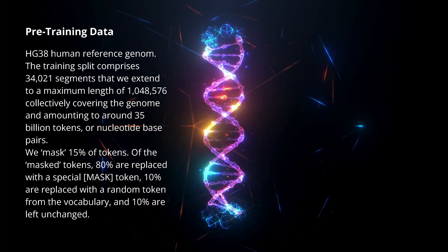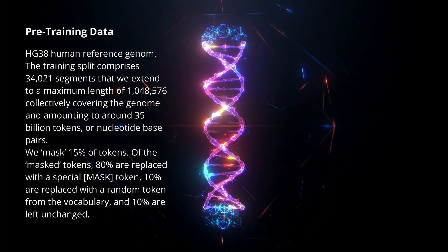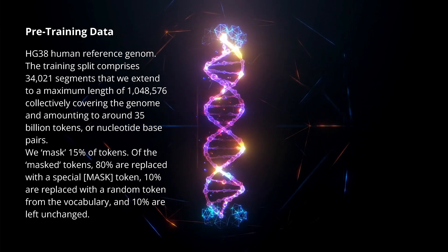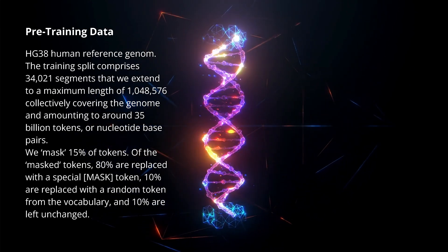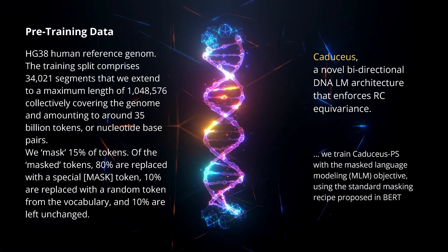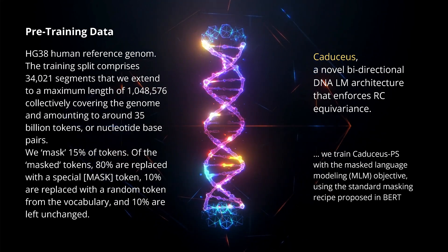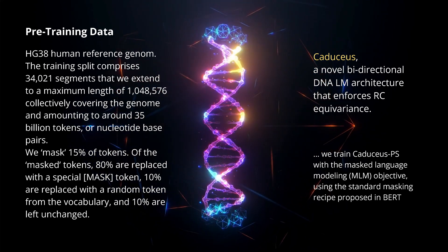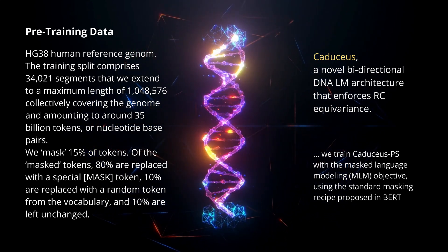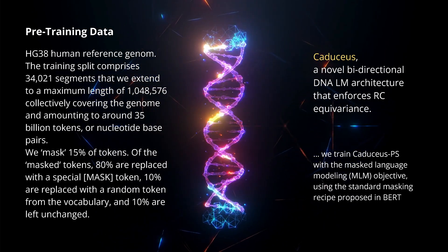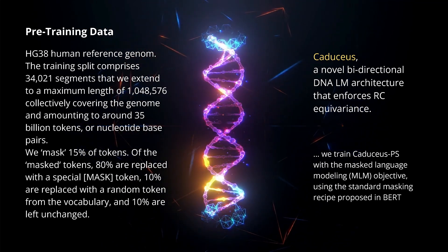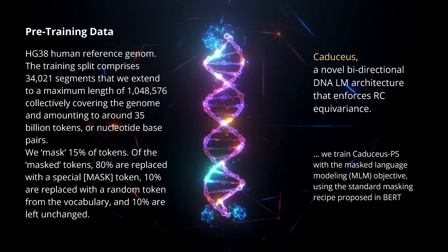As in standard LLMs, they mask 50% of the tokens. Of those masked tokens, 80% are replaced with a special mask token as in BERT, 10% are replaced with random tokens, and the remaining 10% are left unchanged. This is the traditional way to pre-train BERT and SBERT systems. They call this novel bidirectional DNA language model architecture — which enforces the reverse complement equivariant structure of the double helix — CADUCEUS.